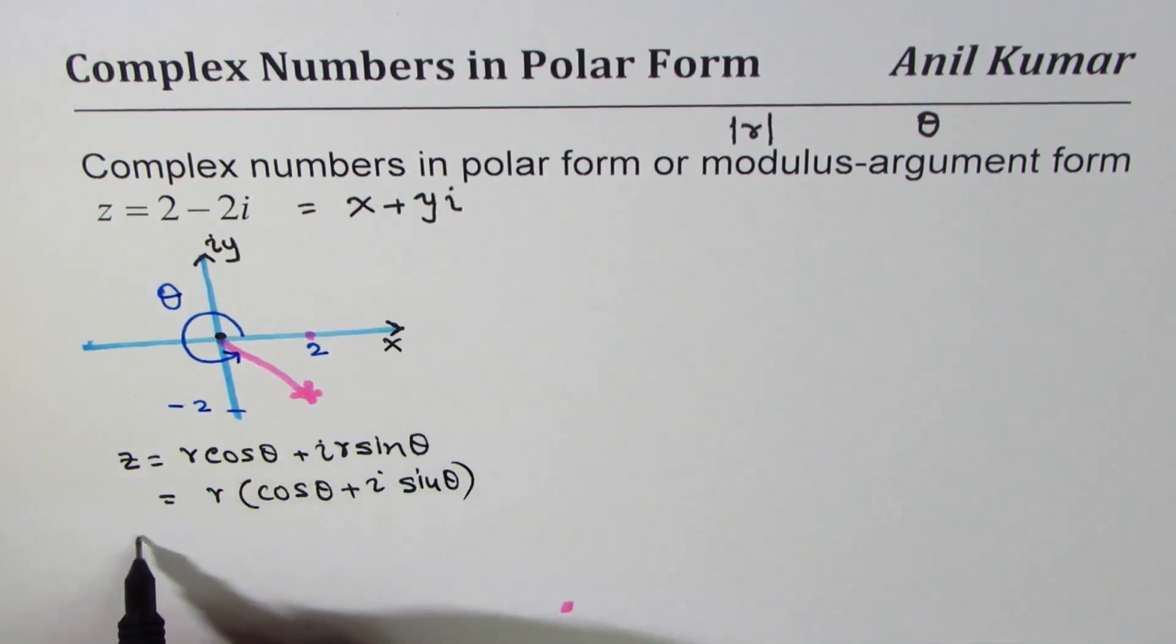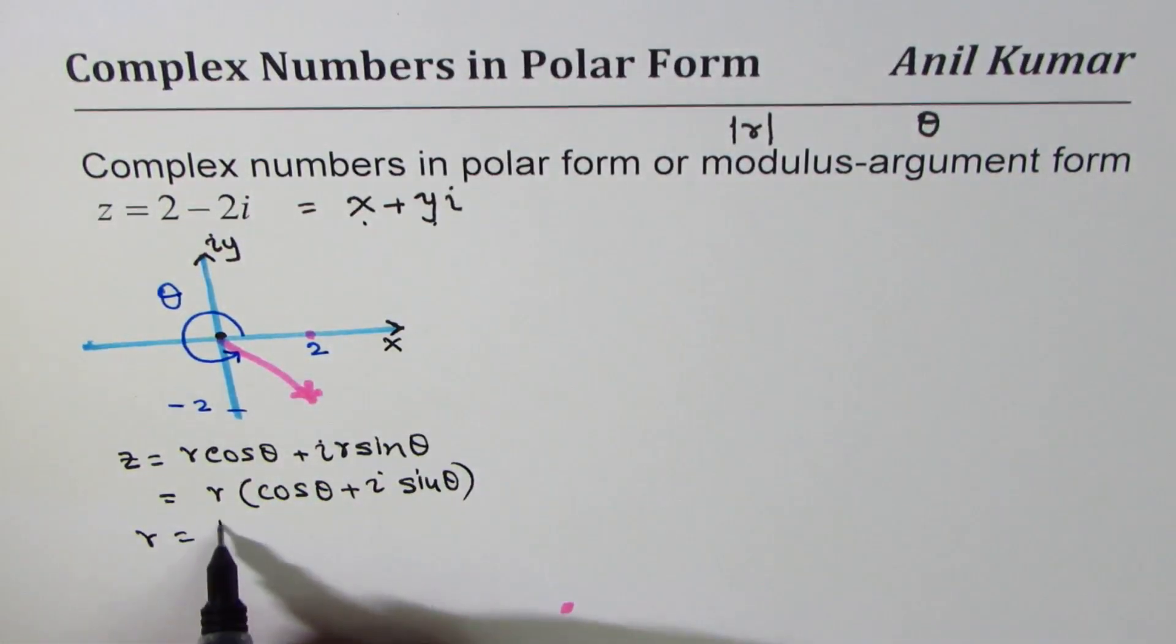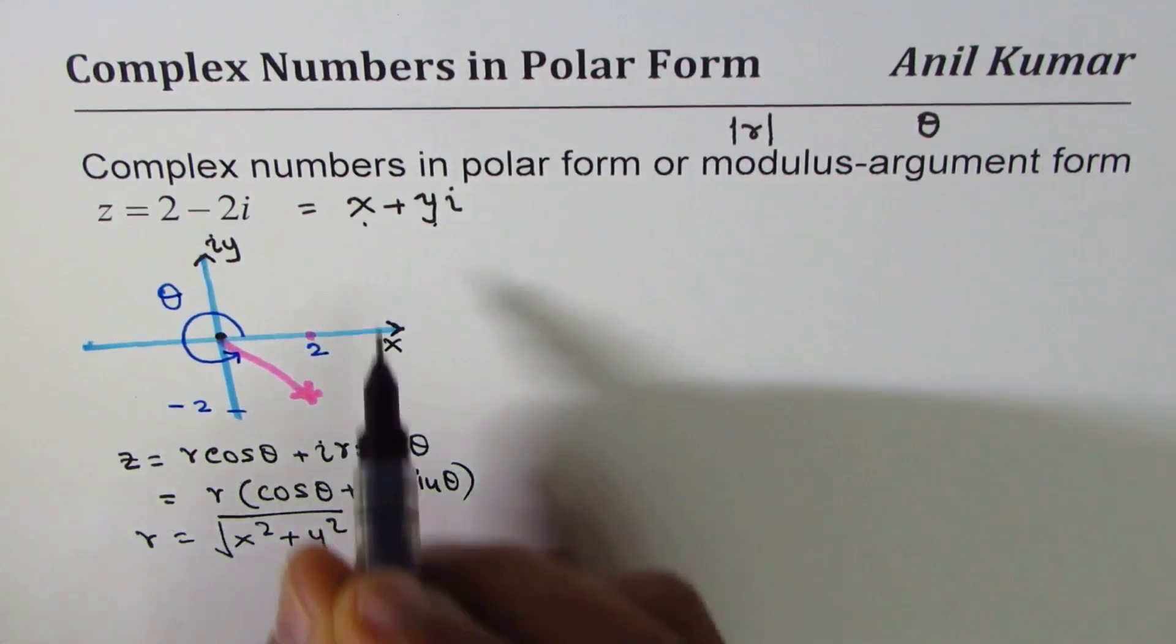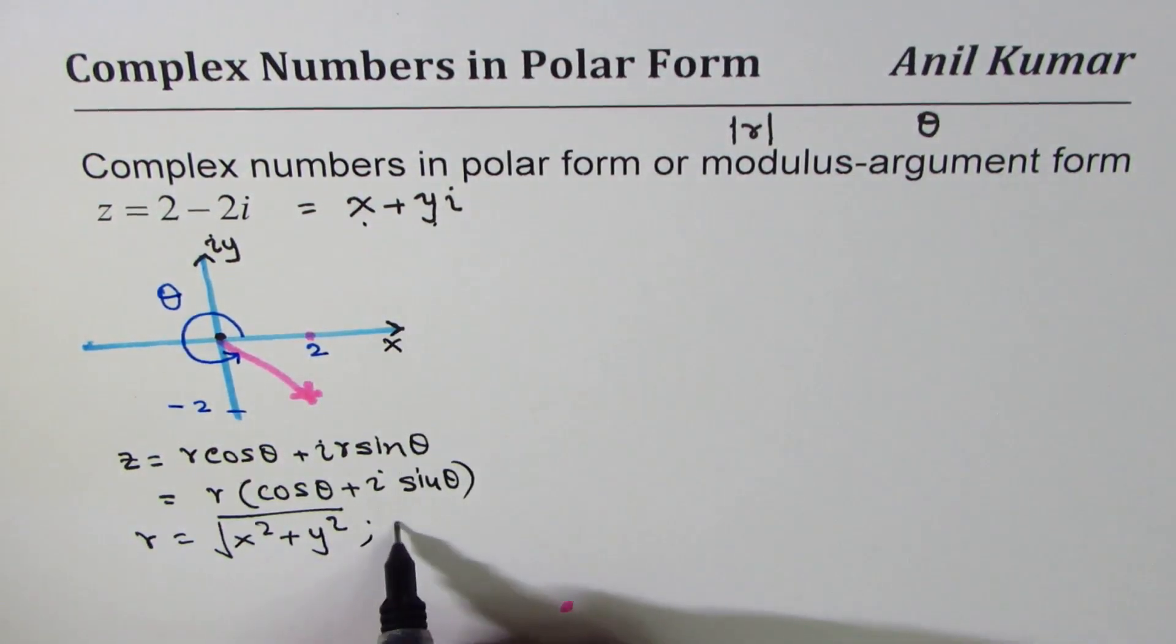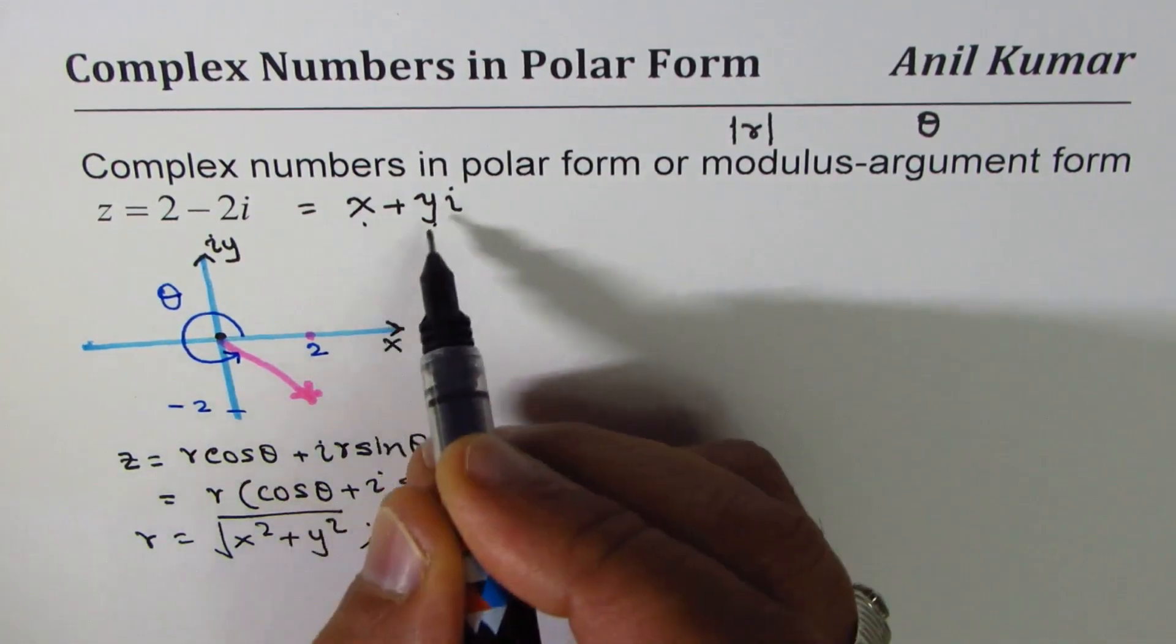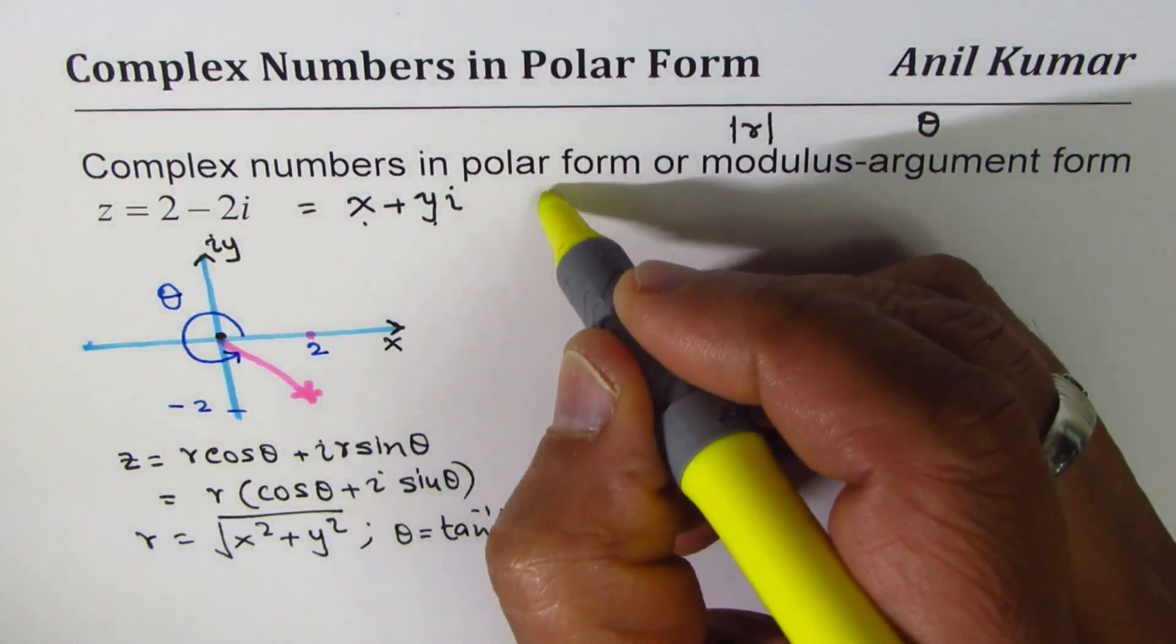The value of r as you know could be found by, I will give you the general formula: square root of x squared plus y squared if we write x plus yi, and theta is tan inverse of y over x. So that is how you really find r and theta.